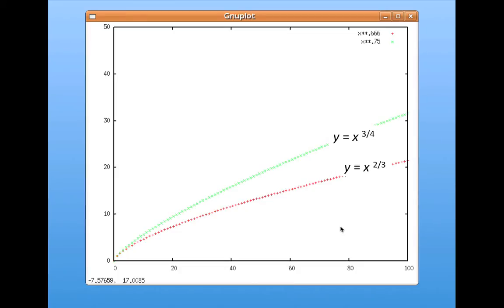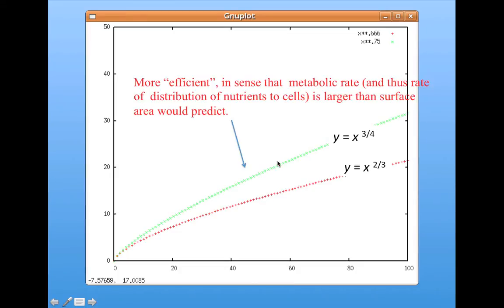What can be gleaned from this is that the metabolic rates of organisms have somehow evolved to be more efficient than we would expect, in the sense that a higher metabolic rate represents a higher rate of distribution of nutrients to cells, so more efficient in that sense.